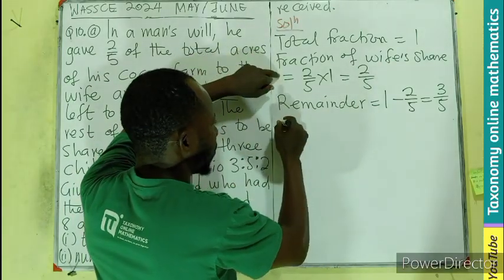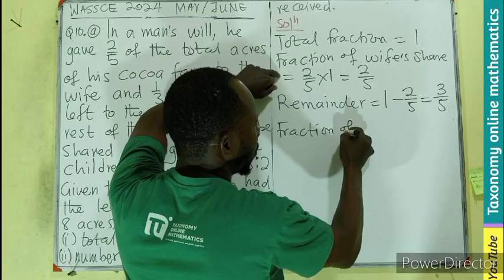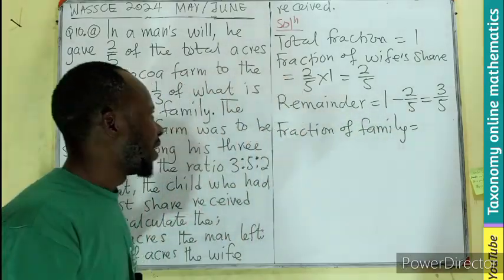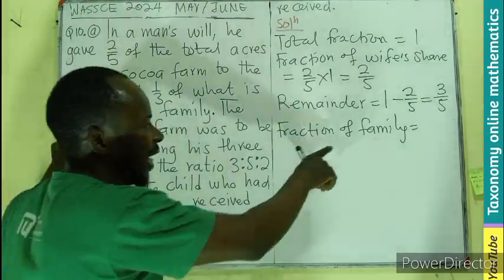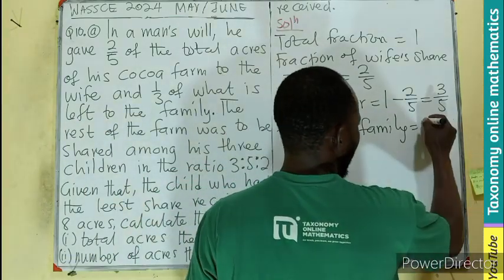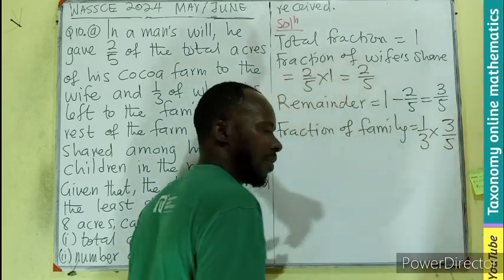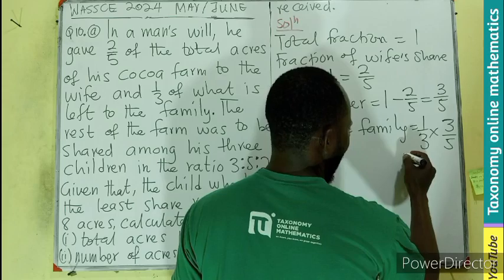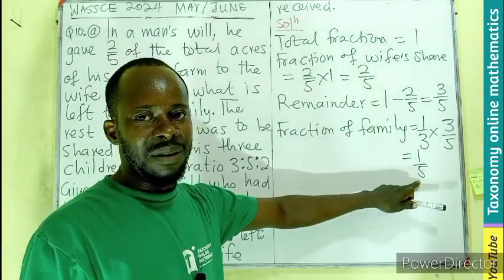So fraction of family. The fraction of family is what? One-third of what is remaining. One-third of this remainder. So that is going to mean one-third times 3 out of 5. And you can see this and this will cancel. The family will be having 1 out of 5. So this is what the family is having.